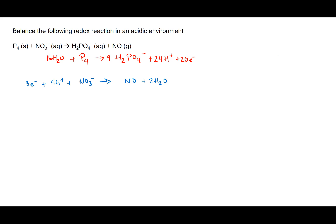Now we have both half-reactions. We need to equalize the electrons: the phosphorus reaction produces 20 electrons, but the nitrate reaction only requires three. To balance them out, we multiply the nitrate reaction by 20 and the phosphorus reaction by 3.